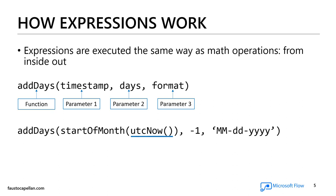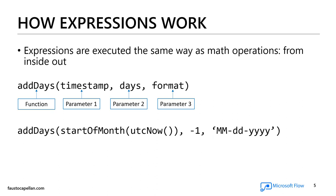From the utcNow — which right now is November 21st — I actually want to get the first day of the month. To get the first of the month, I'm using the startOfMonth function, which gives me the very first day of November. But instead of adding, I want to subtract one day. To subtract using the addDays function, you have to use a negative number. So in my case, I subtract one day from the first day of the month. Once the operation is completed, I want my date formatted as two-digit month, two-digit day, and four-digit year. You're going to see this expression in a demo later on.